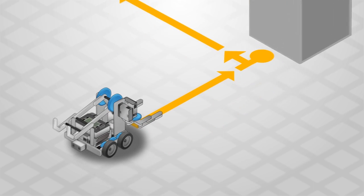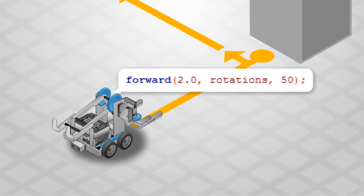Robot C has a command to move forward two rotations, so you can say this part in terms the robot will understand.